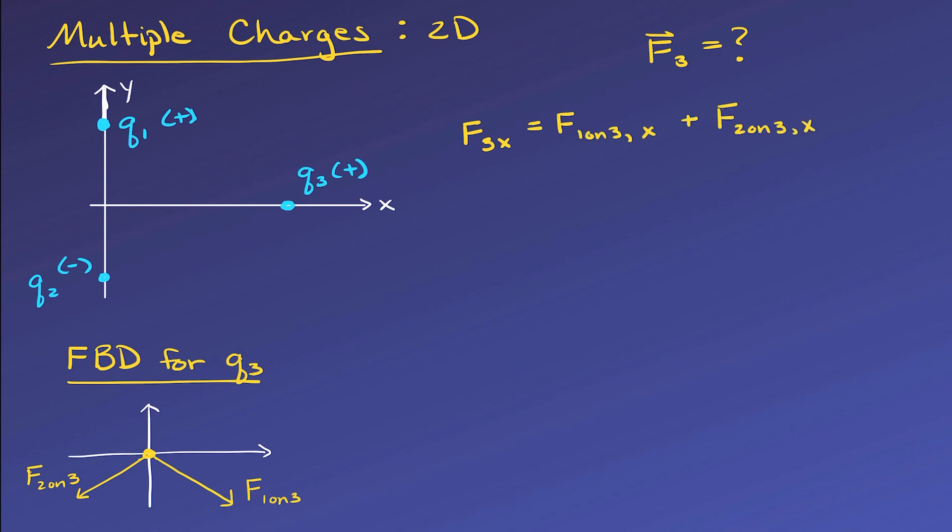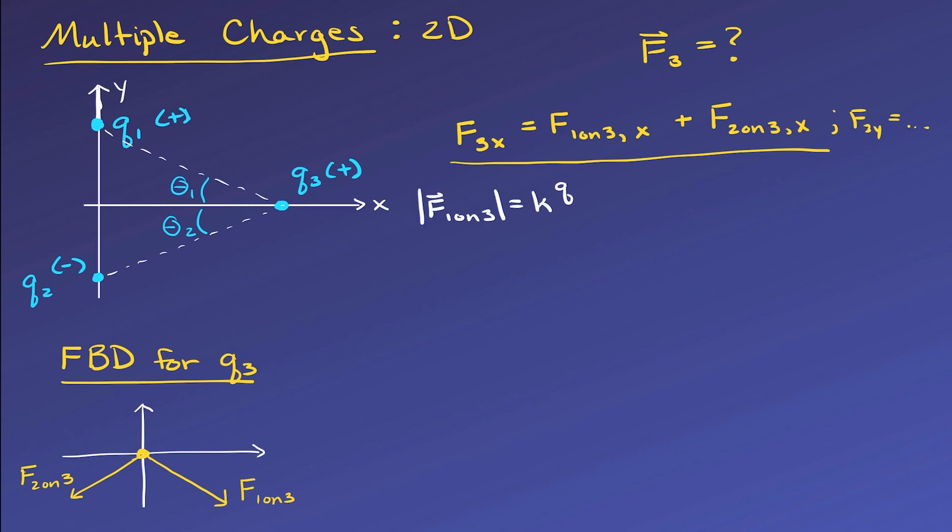Now, filling in our equations, we can get the overall magnitude of the force for each charge, just as we did before using the distance between the charges, which will be along the dashed diagonal lines I've drawn. So we'll need to find that, possibly using Pythagorean theorem, if we need to.